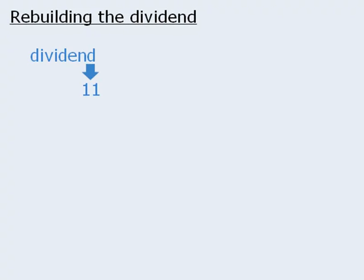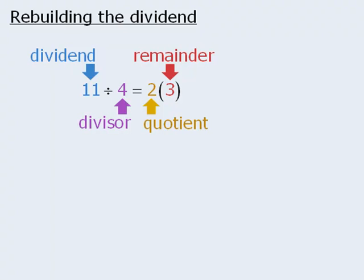Here's what I mean. If we take the dividend 11 and divide it by 4, we get a quotient of 2 with remainder 3. Now we can take these 3 values and use them to create an equation that ends up equaling the dividend of 11.